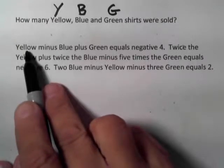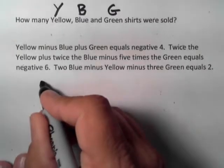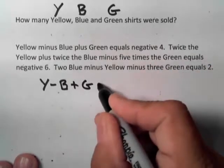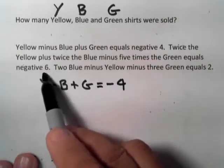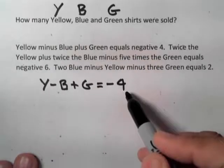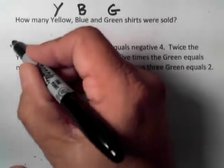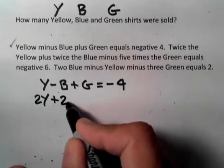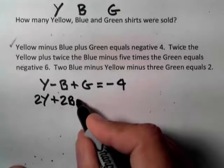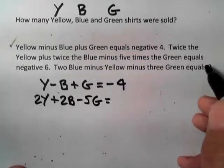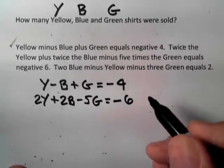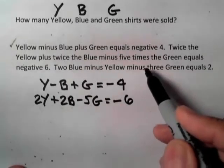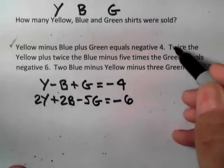First sentence: yellow minus blue plus green equals negative four. Double-checking: Y minus B plus G equals negative four. Second sentence: twice the yellow plus twice the blue minus five times the green equals negative six. Double-checking: 2Y plus 2B minus 5G equals negative six.